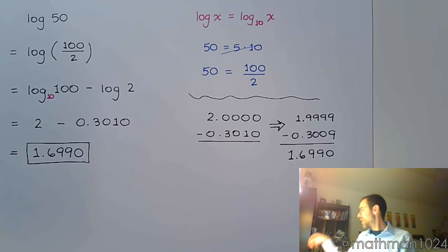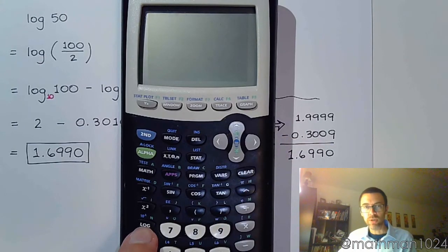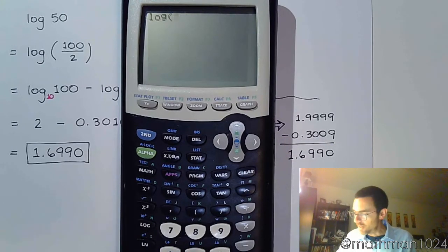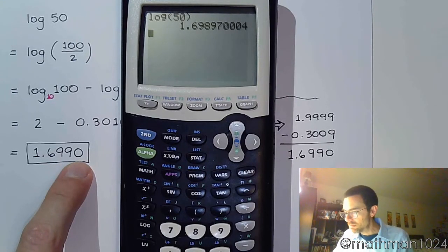But let's go to the calculator. Let's see if the calculator agrees with me. Now it's not going to be exact. Let's see if our approximation is close enough. So we're talking about using the common log right here, log of 50. And yeah, there we go. I think it's close enough.